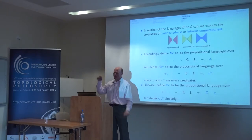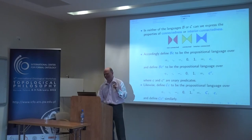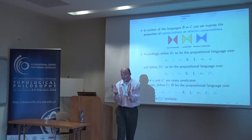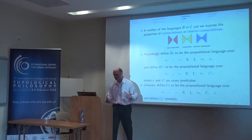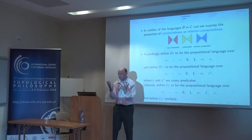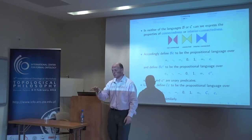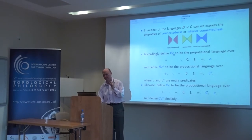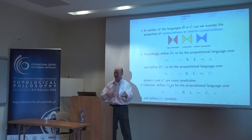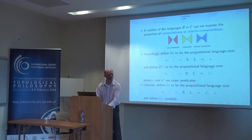What happens now when you add connectedness to the languages B and C? The language C — Boolean RCC8 — we can now add connectedness to that as well. So we have not just the ability to add regions together and take common parts, but also say that they're connected. We have languages BC — Booleans plus connectedness — and CC — Booleans plus contact plus connectedness, i.e., BRCC8 with connectedness.